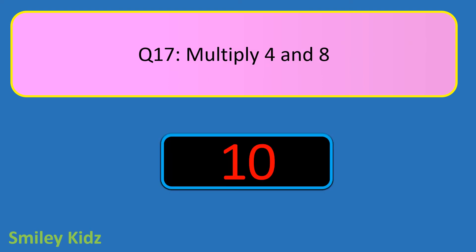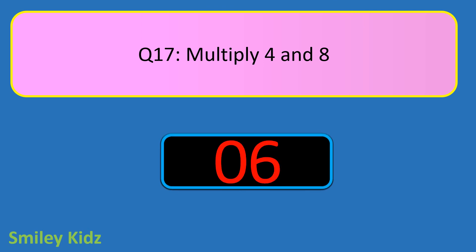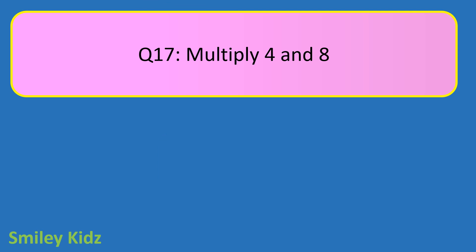Question number 17. Multiply 4 and 8. Your time starts now. And your time is up. The right answer is 32. When we multiply 4 and 8, we get the answer as 32.